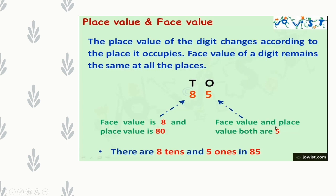Face value and place value of 5 are both 5. Here 5 is in the 1's place, so place value of 5 is 5 × 1 = 5, and face value of 5 is 5 itself. So both are 5. There are 8 tens and 5 ones in 85.